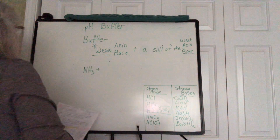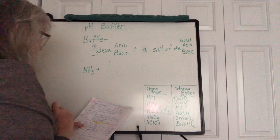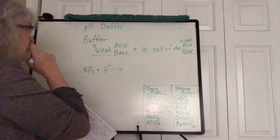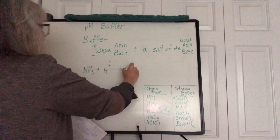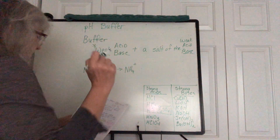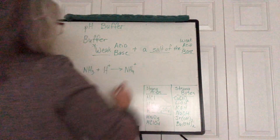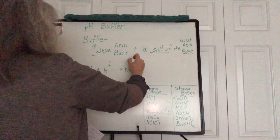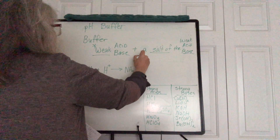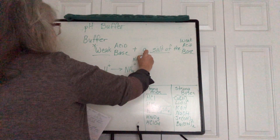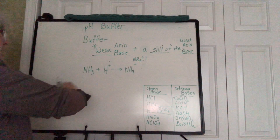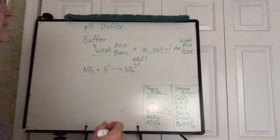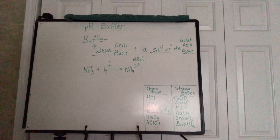Ammonia is not on our strong list, so that's a weak base. If an acid — hydrogen — is added, we already know what's going to happen. We'll get the hydronium ion, and we need to put the salt in there. If we have the salt ammonium chloride, when acid is added it's just going to make more ammonium chloride salt and minimize the change in pH.